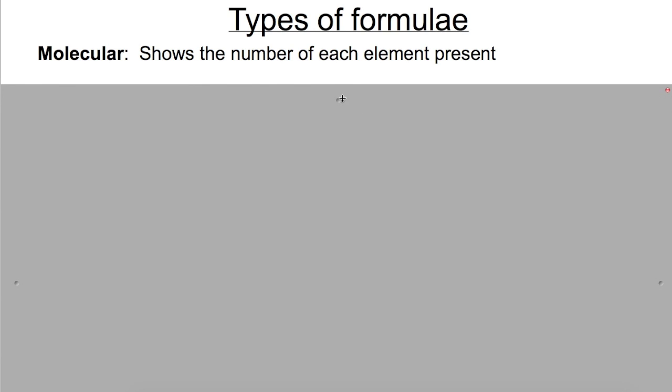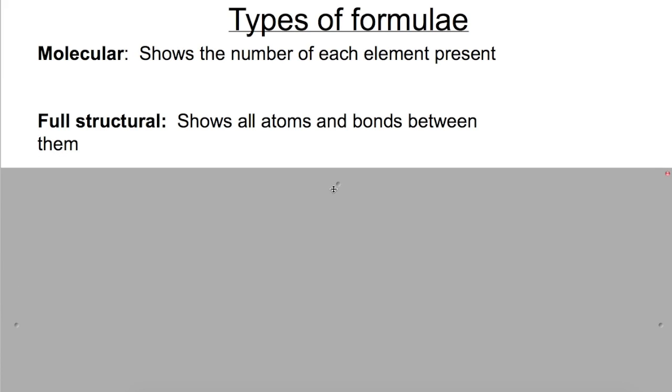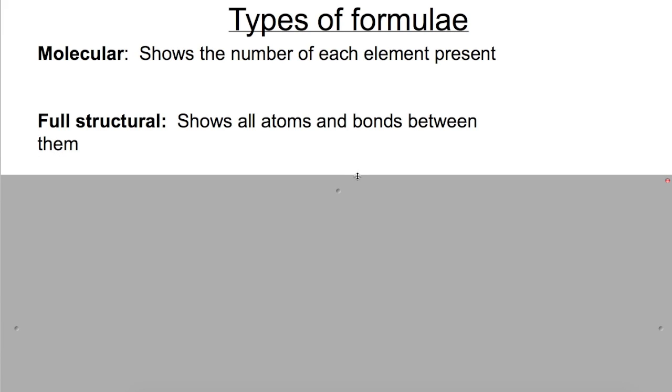The first type is molecular, and this shows the number of each element that is present, so this is the simplest type. Then we have full structural — this shows all of the atoms and all of the bonds that are between them.